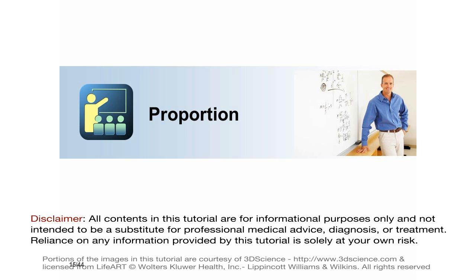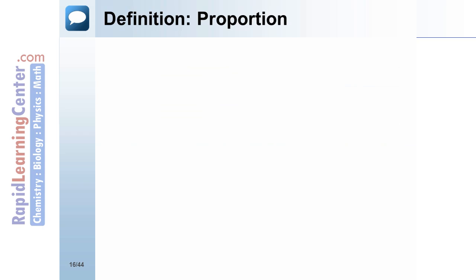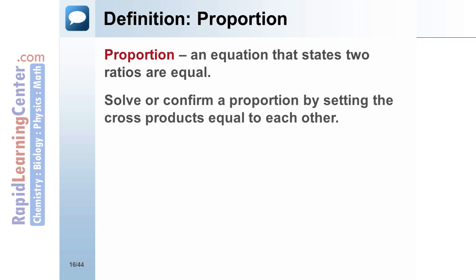The next section will discuss proportions. Definition: Proportion - A proportion is an equation that states two ratios are equal. Solve or confirm a proportion by setting the cross products equal to each other. For example, 2 to 3 equals 8